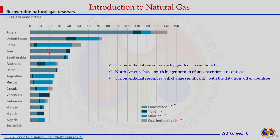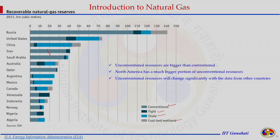Altogether, unconventional resources are bigger than conventional resources. North America has a much larger portion of unconventional resources, and in terms of the future, America is going to dominate in terms of tight gas, shale gas, and coal bed methane reserves. However, unconventional resource data may change depending on the survey, study, or forecasting model applied.